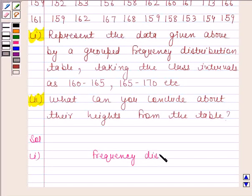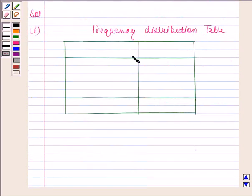Taking the class intervals as 160 to 165, 165 to 170, etc. Let us make a table now. We have drawn two columns, one for the height and another for frequency.